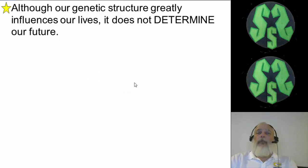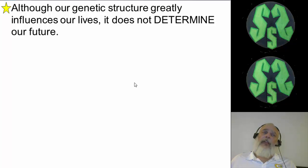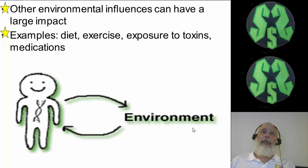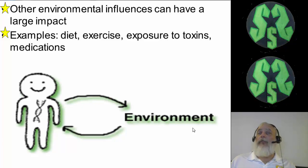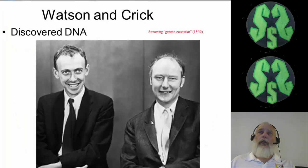Here's something important to keep in mind: although our genetic structure greatly influences our lives, it does not determine our future. We get a lot of our traits from our genes, but it doesn't determine everything. Environmental influences can have a large impact — diet, exercise, exposure to toxins like carcinogens which could cause cancer, or certain medications that might stunt or promote your growth. There are all different kinds of things besides just your genes that will determine how you develop.